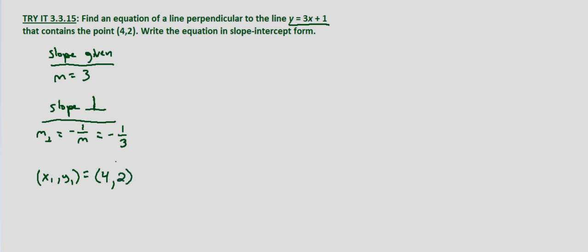So again, the difference between this and finding parallel lines equations is finding that slope. When they're parallel, it's the same slope. When they're perpendicular, it's the opposite or negative reciprocal.